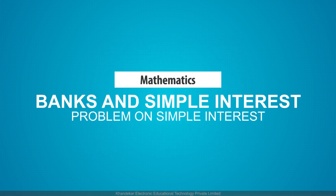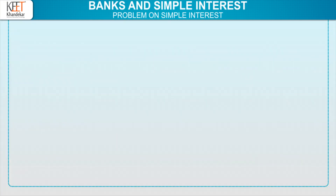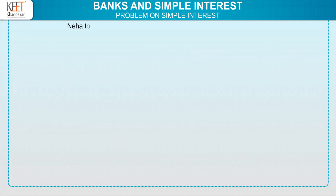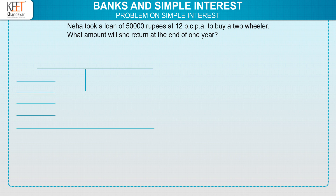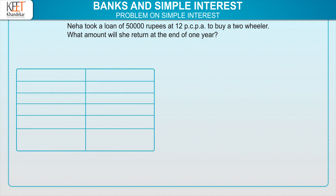In this video, we will learn how to solve problems on simple interest. Let us take an example. Neha took a loan of 50,000 rupees at 12% per annum to buy a two-wheeler. What amount will she return at the end of one year? While solving the problems on simple interest, always make a table as shown on the screen and fill the information from the example in it very carefully.